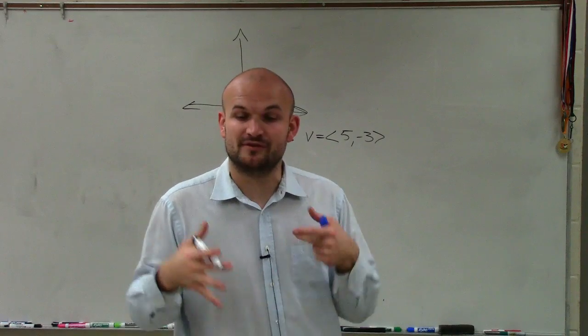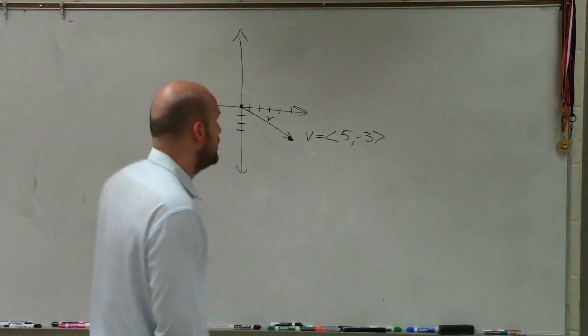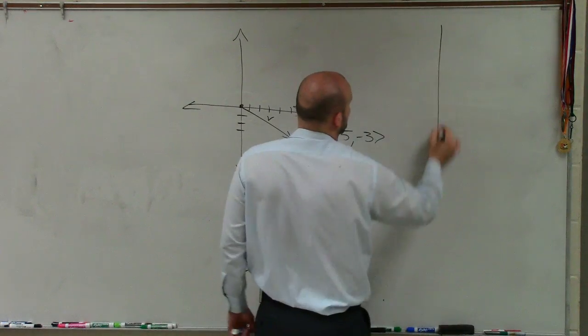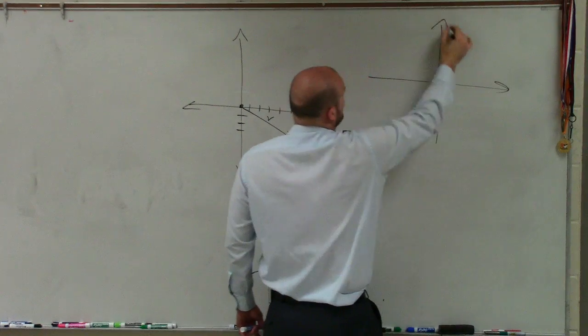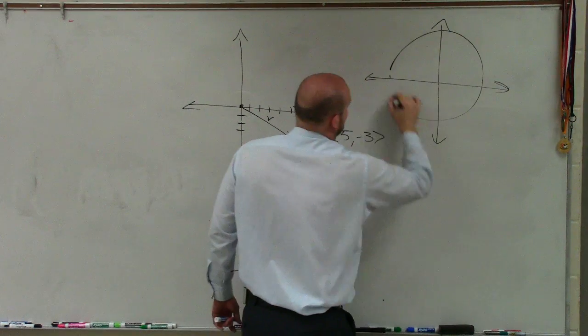But what if I say write that as a linear combination of our standard unit vectors? Well, again, we need to go back and say what were those standard unit vectors again? Oh yeah, that unit circle thing. So if I have a unit circle...